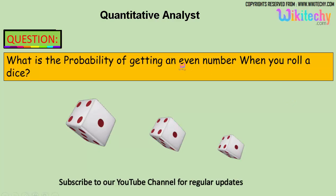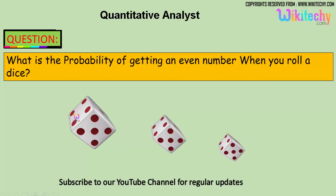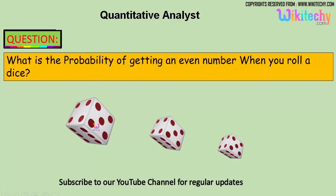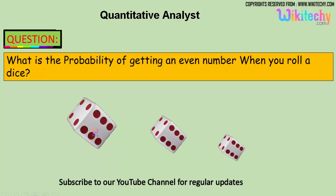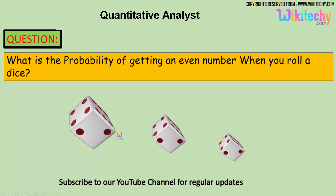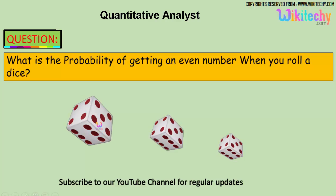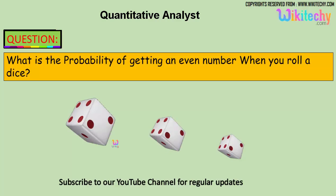So what is the probability of getting an even number when you roll a dice? A dice has six numbers: one, two, on the other side three, this one is five, four, and six. So we have six numbers.